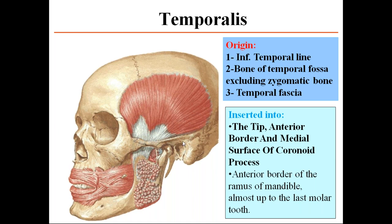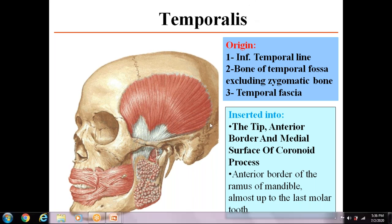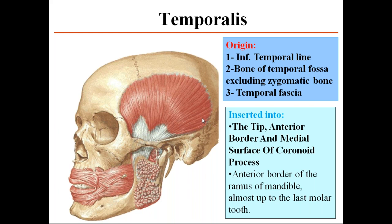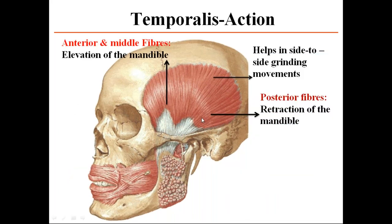Regarding the actions of the temporalis muscle: the anterior and middle fibers help in elevation of the mandible, which is the only movable bone in the skull. It also helps in side-to-side grinding movement. The posterior fibers help in retraction of the mandible.